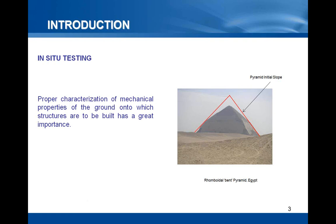Proper characterization of mechanical properties of the ground onto which structures are to be built is, of course, very important. Lack of knowledge of these can have catastrophic effects. A very old example of that is the Bent Pyramid in Egypt, which is among the first ever built large pyramids. Due to serious problems during construction, coming from large soil movements, it was decided to reduce the slope of the pyramid faces in order to reduce the overall weight of the structure.